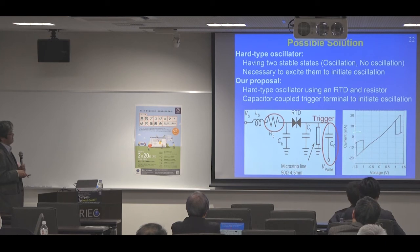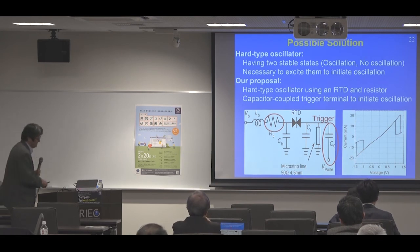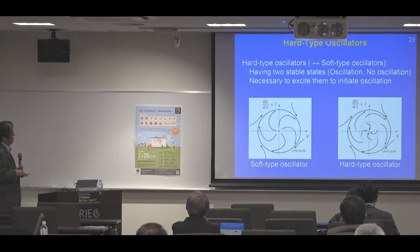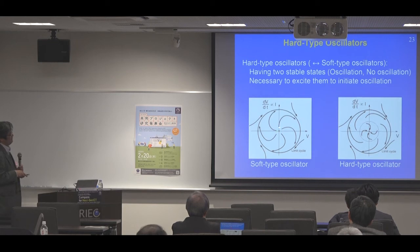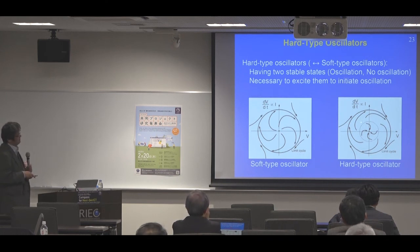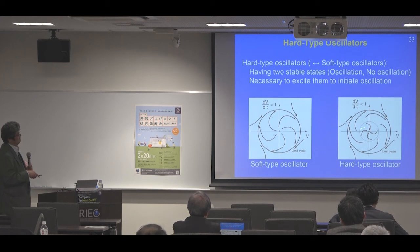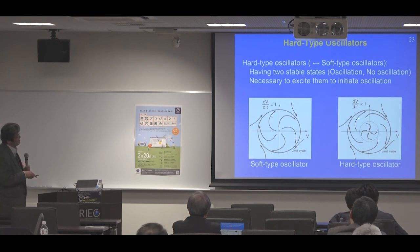But if we trigger the circuit using a capacitor-coupled trigger circuit, oscillation begins. This is the phase-space portrait of the soft-type and hard-type oscillators. For soft-type oscillators, the origin is unstable and self-excited oscillation occurs from any initial state. For hard-type oscillators, no oscillation occurs within a certain area around the origin. To oscillate the circuit, we must kick the state outside this area, and then oscillation follows using these trajectories.